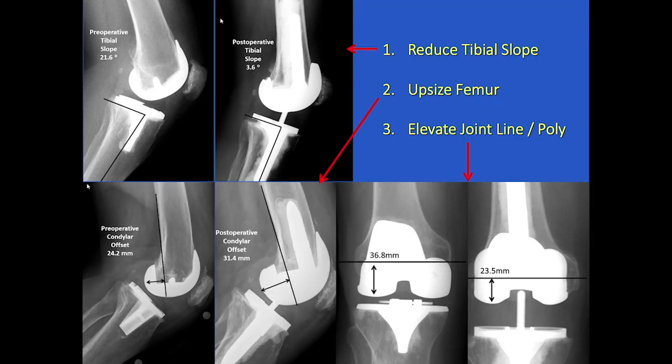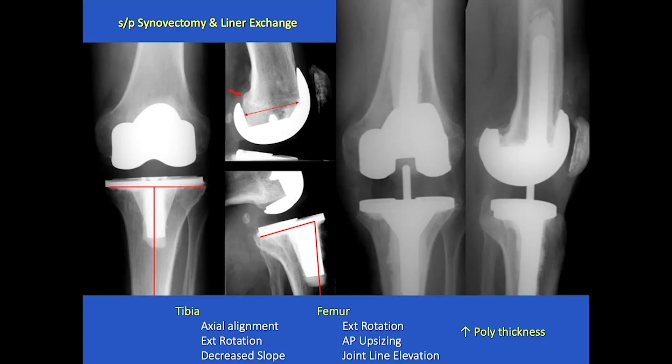In this case, the posterior slope is reduced from 21 degrees to 3.6 degrees. The offset goes from 24.2 up to 31, and the distalized femur measurement goes from 36.8 down to 23.5. That's not an elevated joint line — that is actually a normal joint line, even though it looks dramatic, and the double bubble sign is gone.